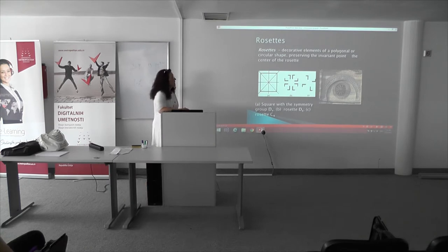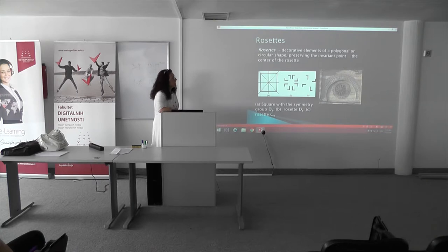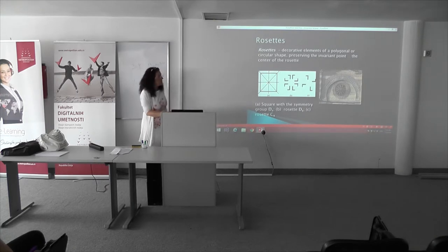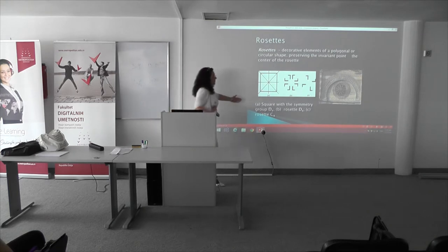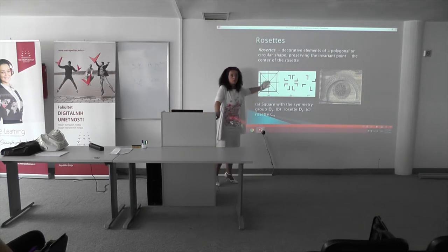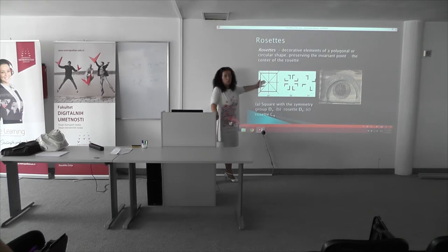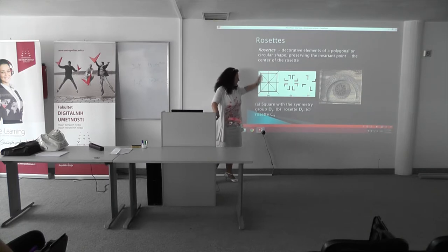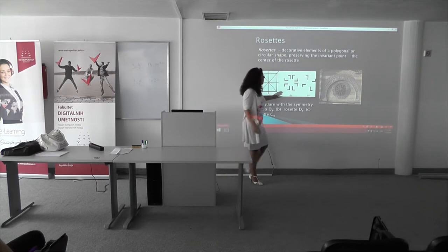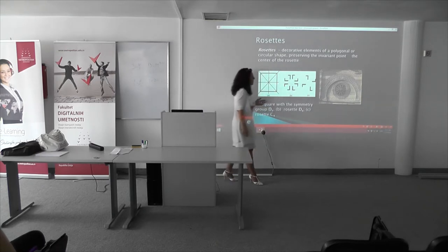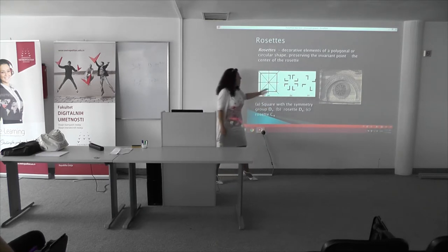Let's start with rosettes. Rosettes are decorative elements of a polygonal or circular shape, presenting the invariant point — the center of the rosette. There are some examples. From a mathematical point of view, this is a square with horizontal and vertical lines of symmetry and a diagonal. We can follow which kind of symmetry we have.